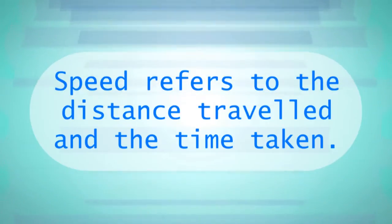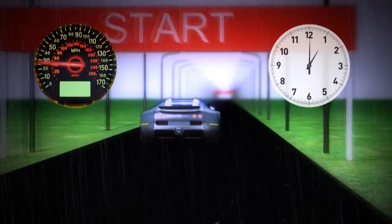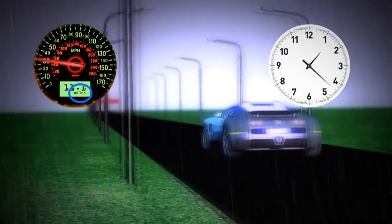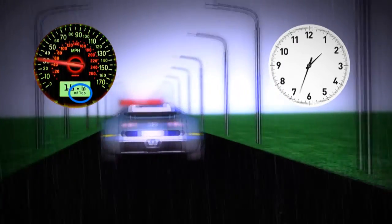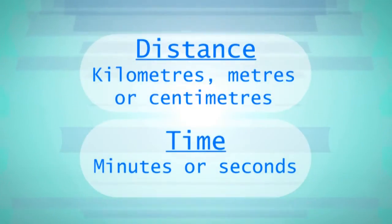Speed can be represented by this formula: Speed equals distance divided by time. In the example we used, distance was measured in miles and time was measured in hours, but we could have used any number of acceptable units in the formula. For example, kilometres, metres or centimetres for distance, or minutes or seconds for time.